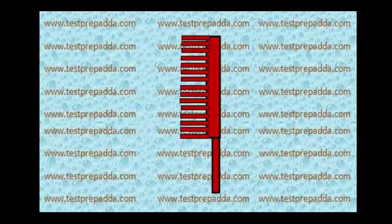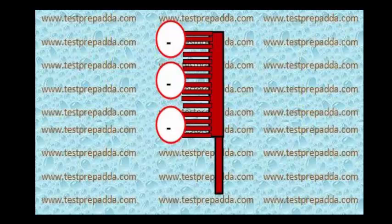And when you rub the comb on wool, electrons are transferred from wool to comb. Actually, how tightly an object holds its electrons depends upon the material it is made of. The comb holds electrons more tightly, which is why electrons are transferred from wool to comb, and because of this, the comb overall becomes negatively charged.